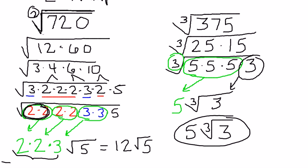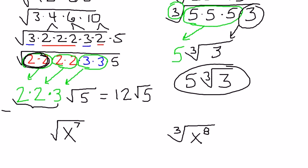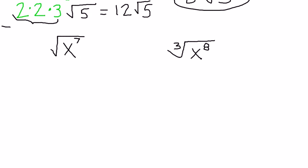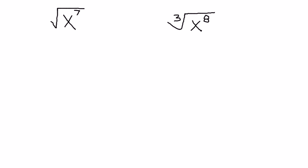I hope that really helps if you've been struggling to figure out how to break down these radicals. Now let's take a look at a couple of problems where we have variables. The first one: the square root of x to the 7th. It's a square root again.